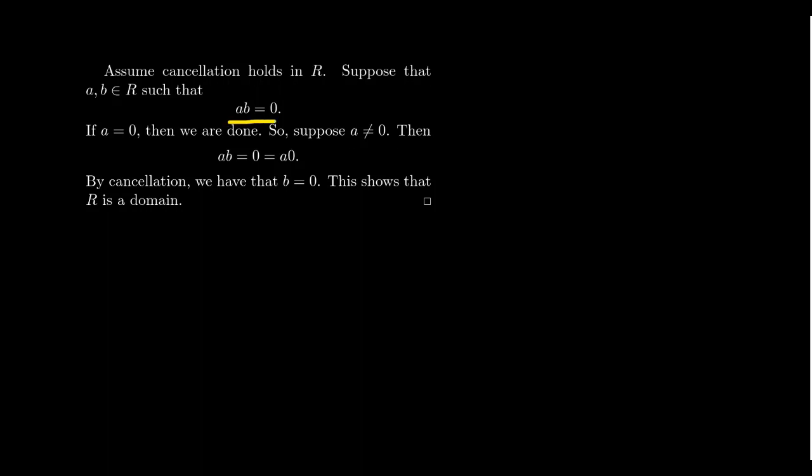If AB equals zero, we also know that A times zero equals zero because zero is dominant. You can cancel A from both sides and we end up with B equals zero.